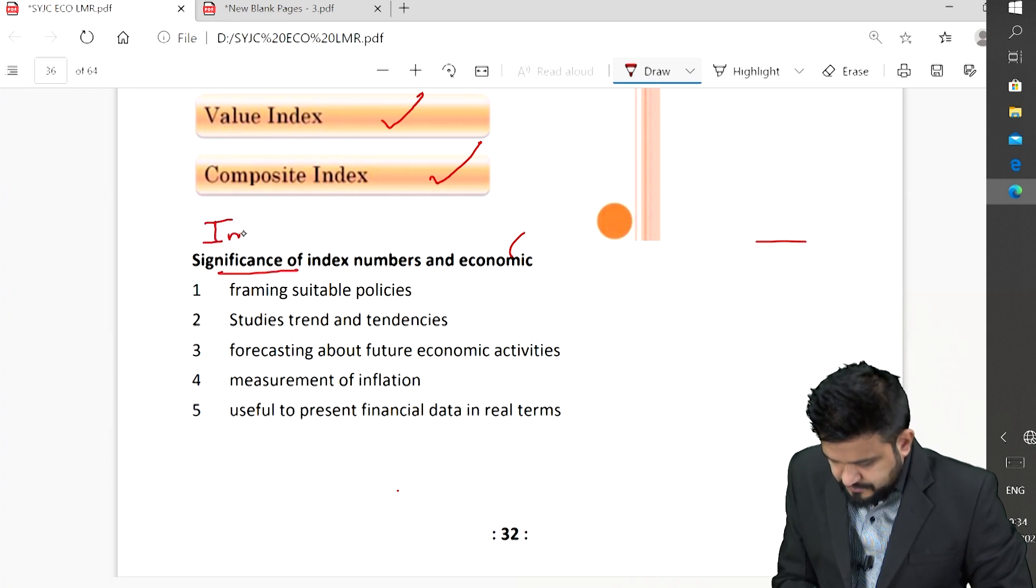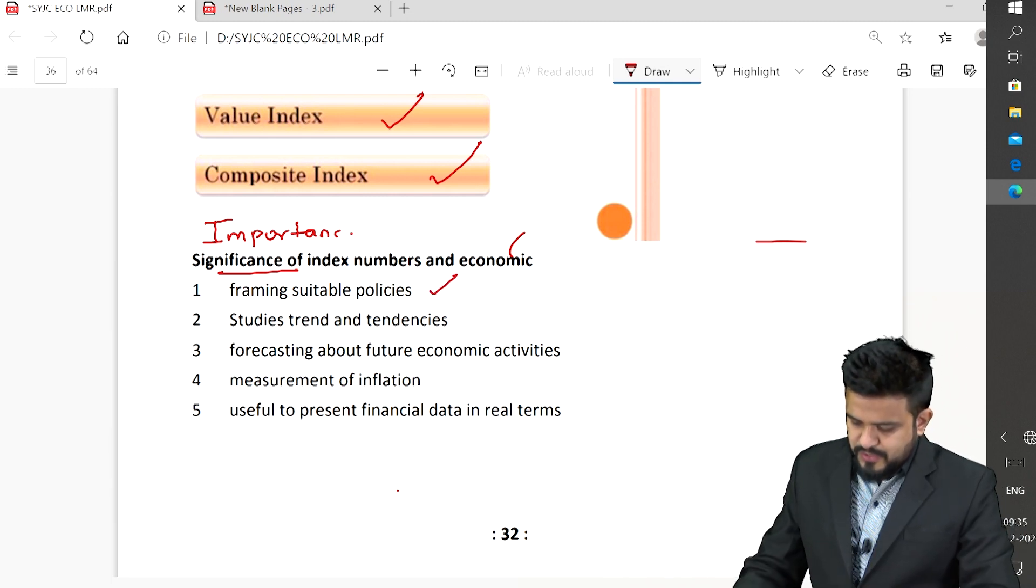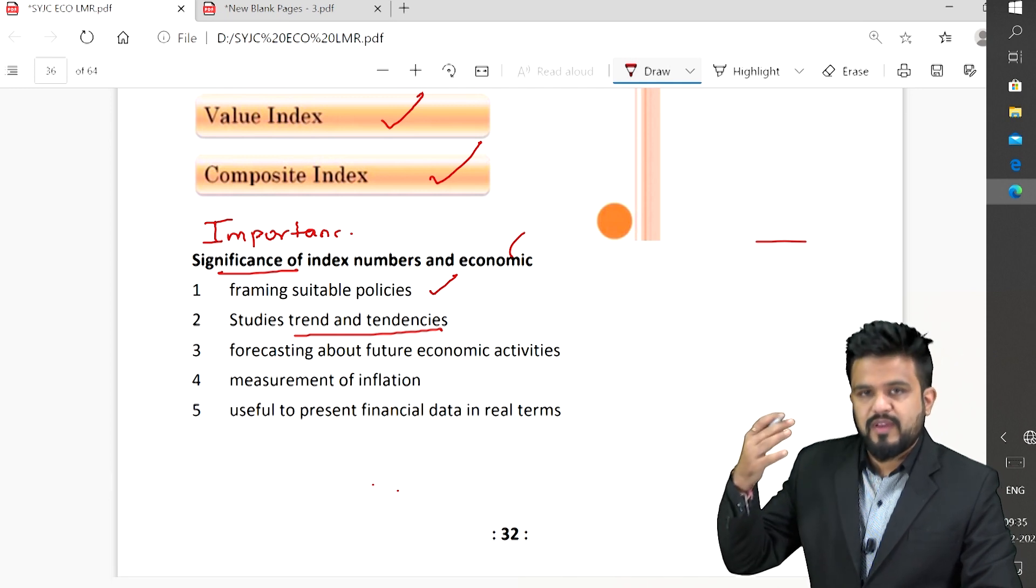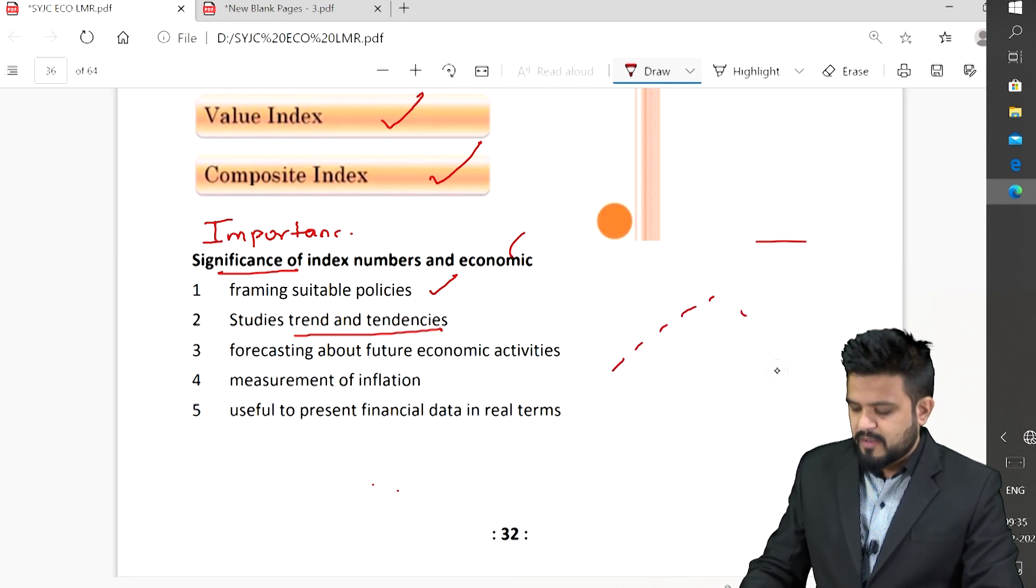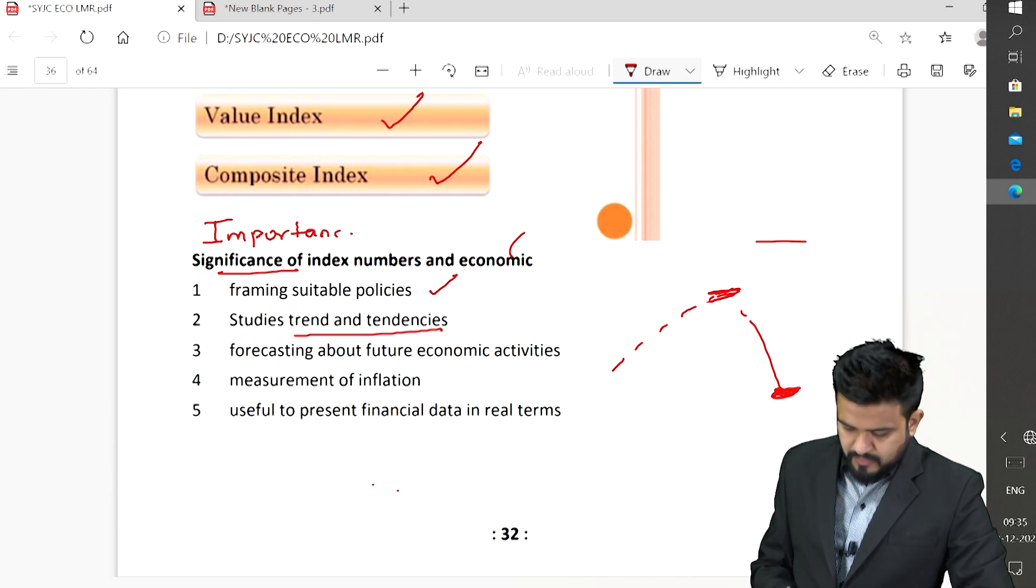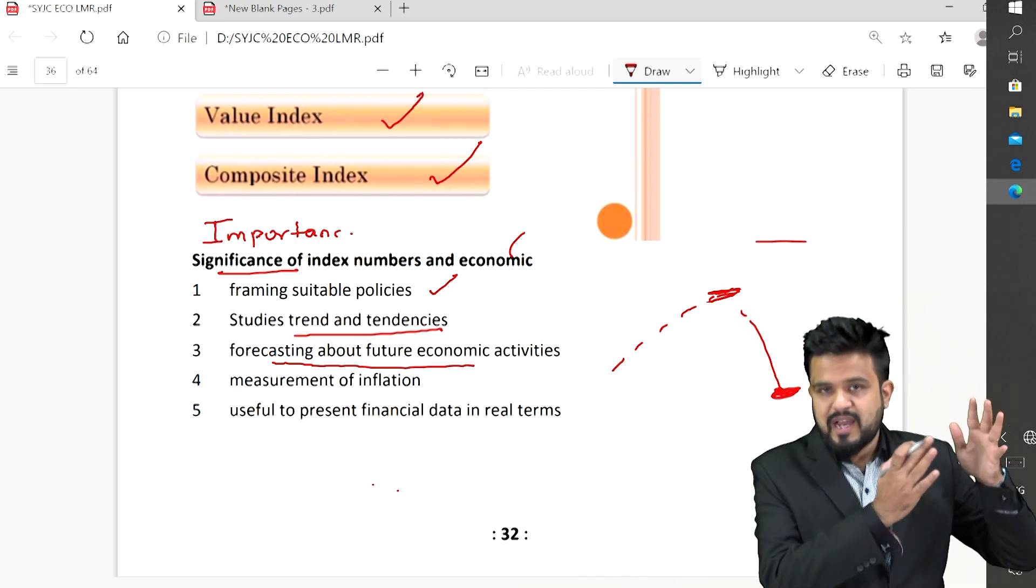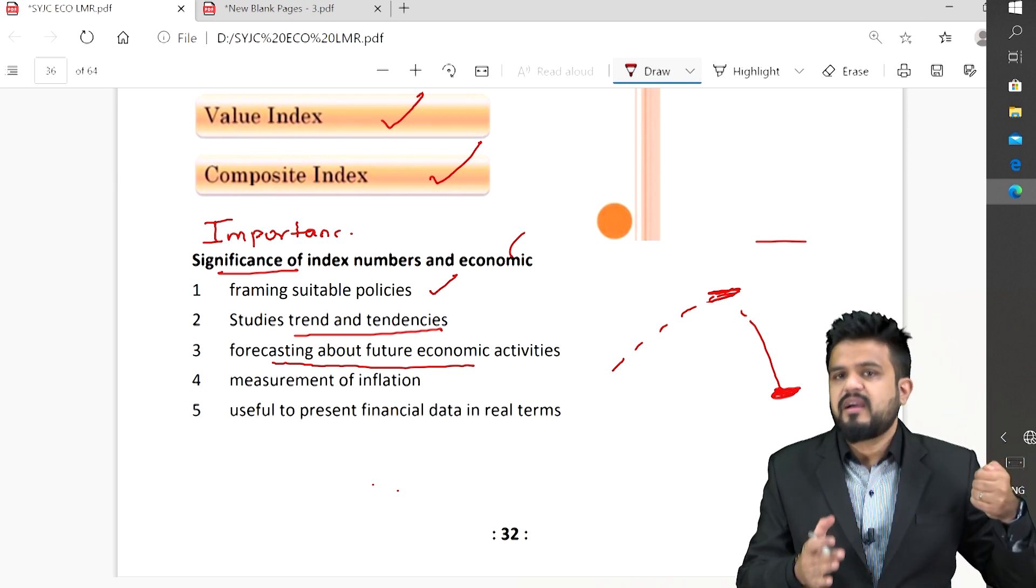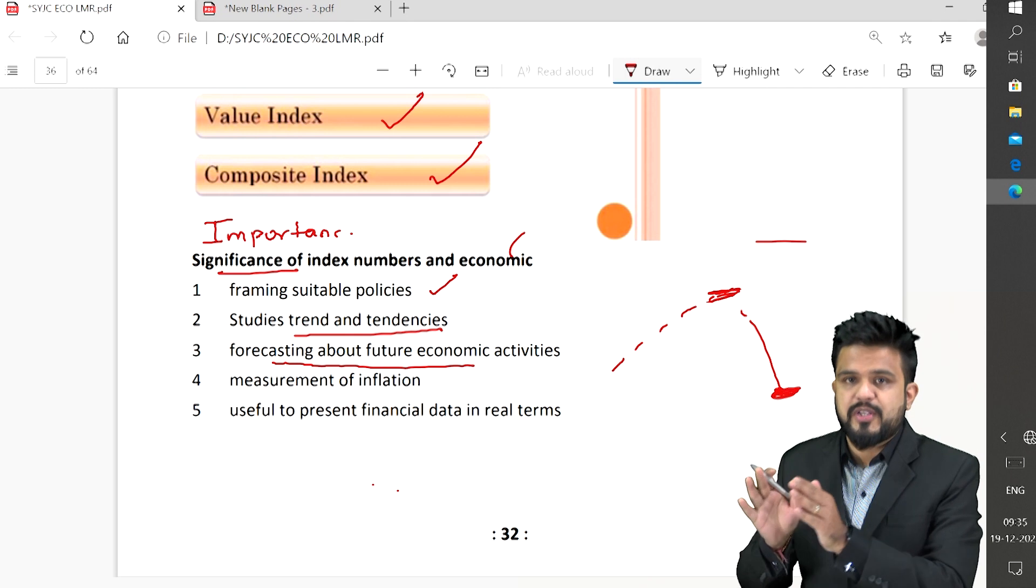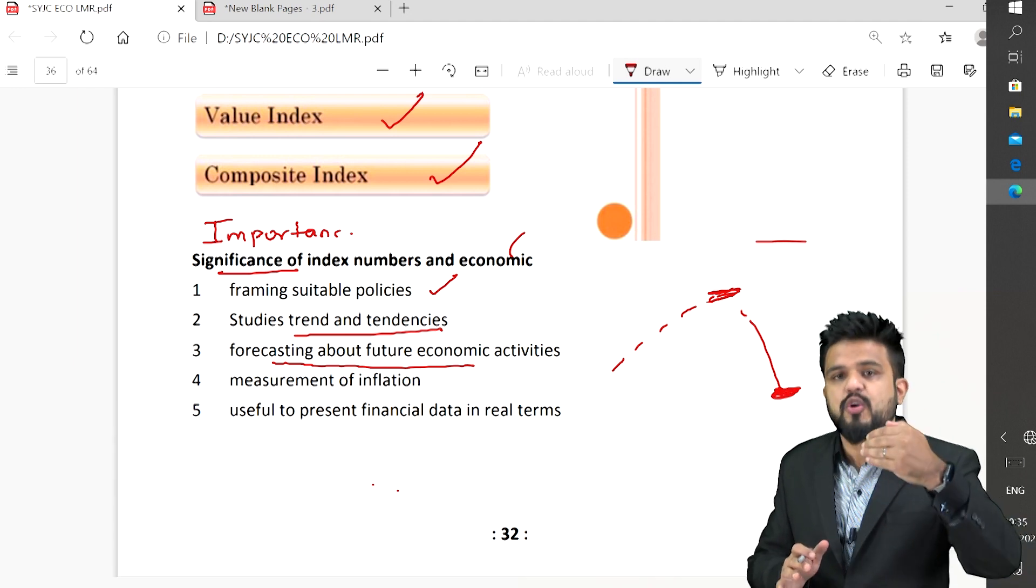Significance: it helps in framing suitable policies, very much helpful during budget. Studies trends and tendencies to where economy is going, whether we are coming down, whether economy is moving up, whether it is at peak, whether it is at the bottom point, all these trends we will come to know. Forecasting about future economic activity, very important. Index number will compare past data with current, comparing the previous year with the current year which will help us to understand what is going to come in future. Rough estimation, forecasting is never accurate. Forecasting is predicting or anticipating changes which are going to take place in future.